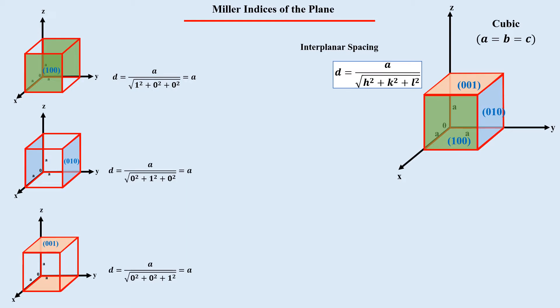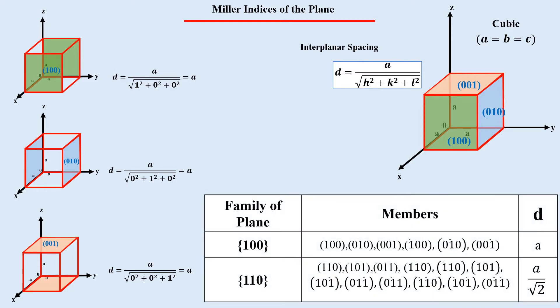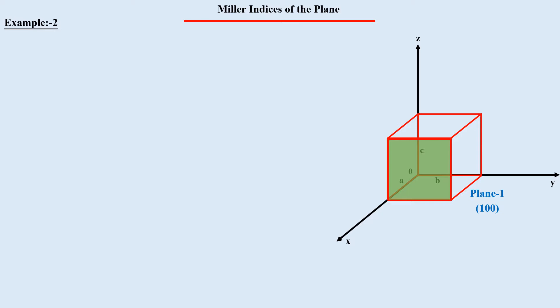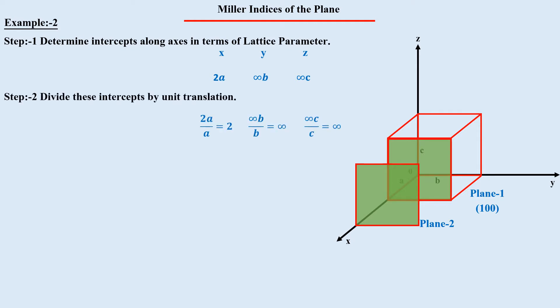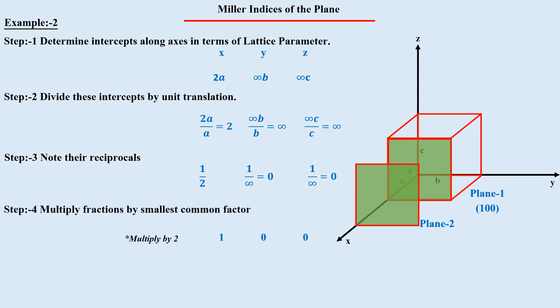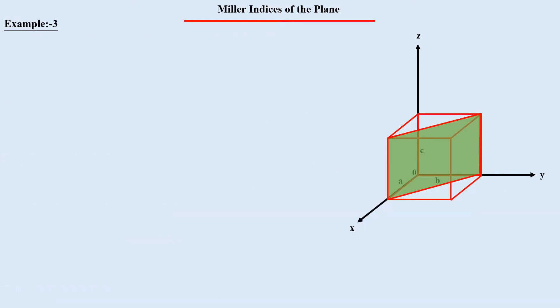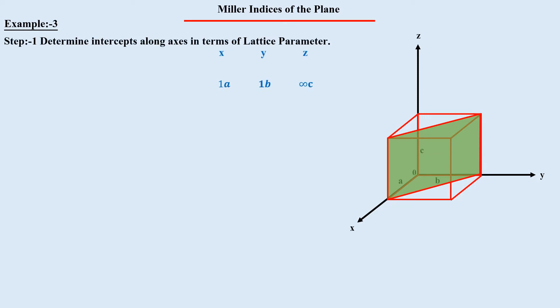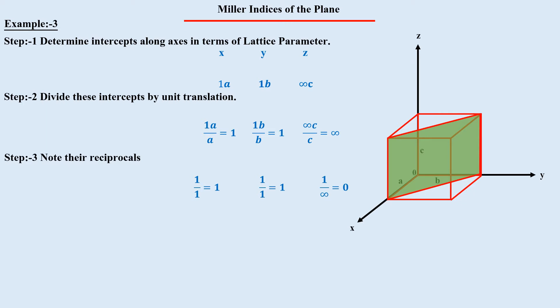The interplanar spacing of all members in a family is equal — that is what qualifies them as members of the family. Plane 1 has Miller indices (1 0 0). If we consider a parallel plane that cuts the x-axis at 2a, taking reciprocals gives 1/2, 0, 0. To remove the fraction, we multiply all values by 2, giving Miller indices (1 0 0) again. Hence, all parallel planes share the same Miller indices. In the next example, a plane on the body diagonal cuts the x-axis at a and the y-axis at b while parallel to the z-axis, giving Miller indices (1 1 0).